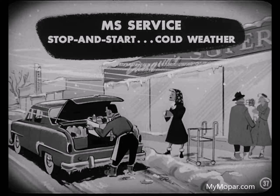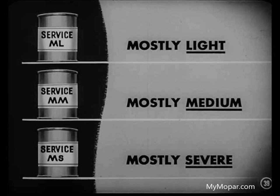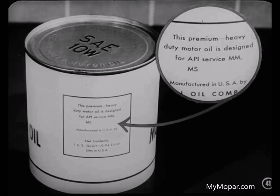The third classification is the service an engine gets under hot weather, high speed operation — such as a summer vacation trip, or frequent driving in hilly country. This driving is known as MS service. MS service also applies to cars that are used in stop-and-start driving, especially during very cold weather. I ought to keep those general types of driving conditions in mind. But just where do those letters ML, MM, and MS come from? Well, those letters were just picked to indicate the type of service. The ML could stand for mostly light service. The MM might stand for mostly medium service. And the MS could mean mostly severe service. Those ML, MM, MS letters, Tony, are American Petroleum Institute service classifications. You may have seen the abbreviation API on oil can labels.